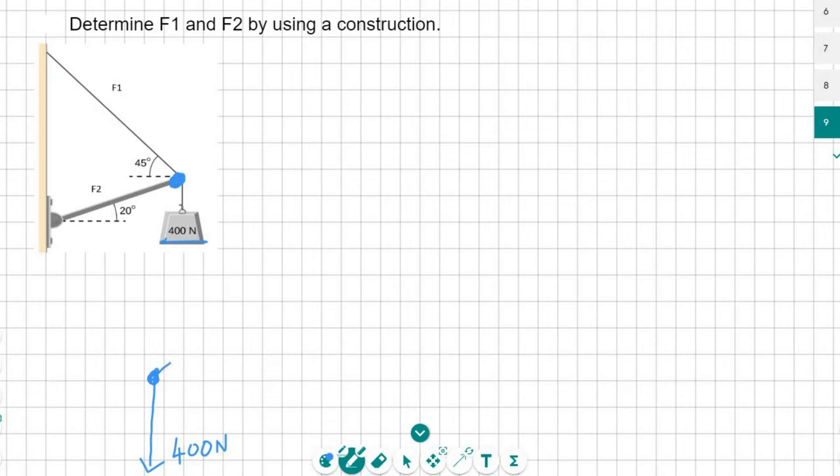So the pole, which is F2, is actually going to go in this direction. It's very important that you see that. And it's a 20 degree angle.